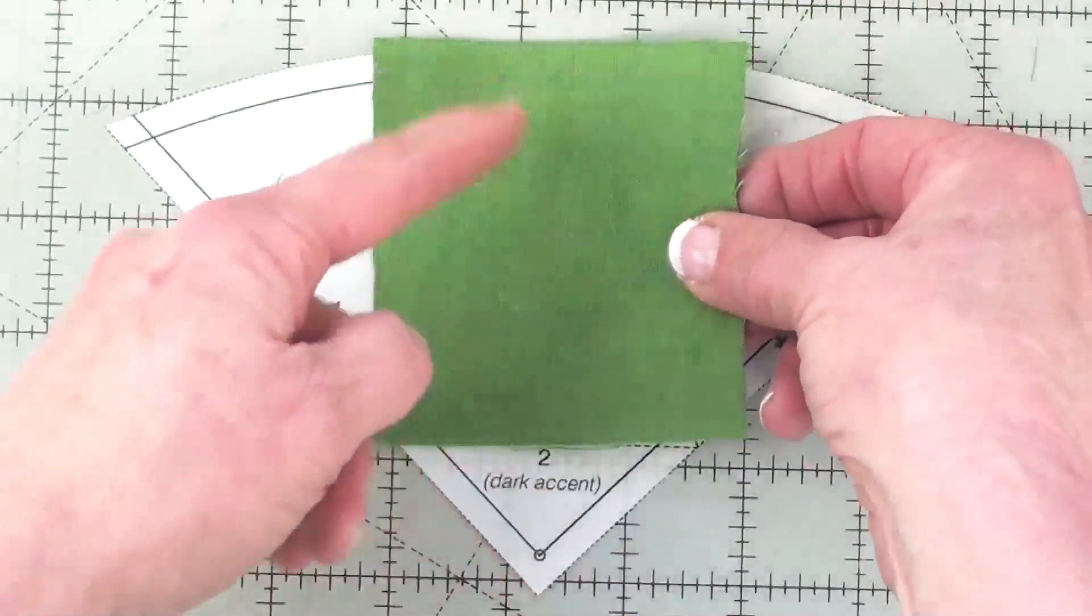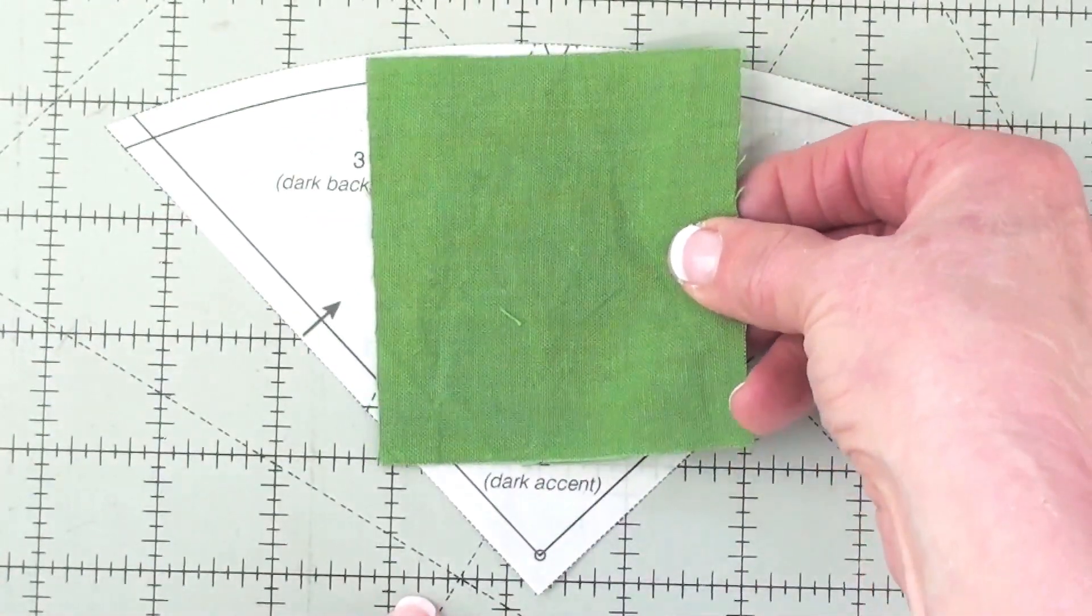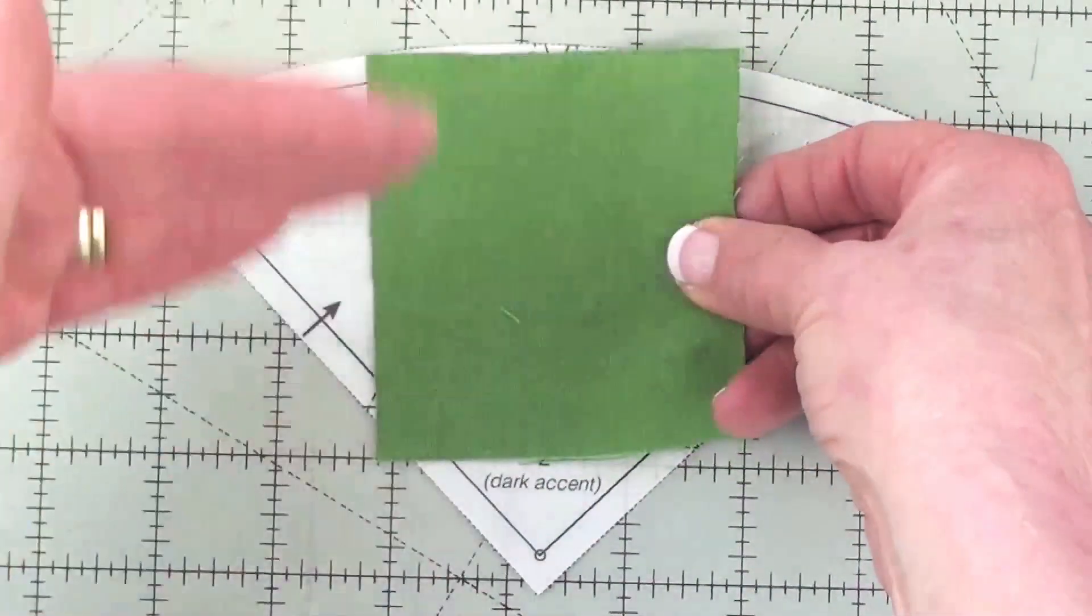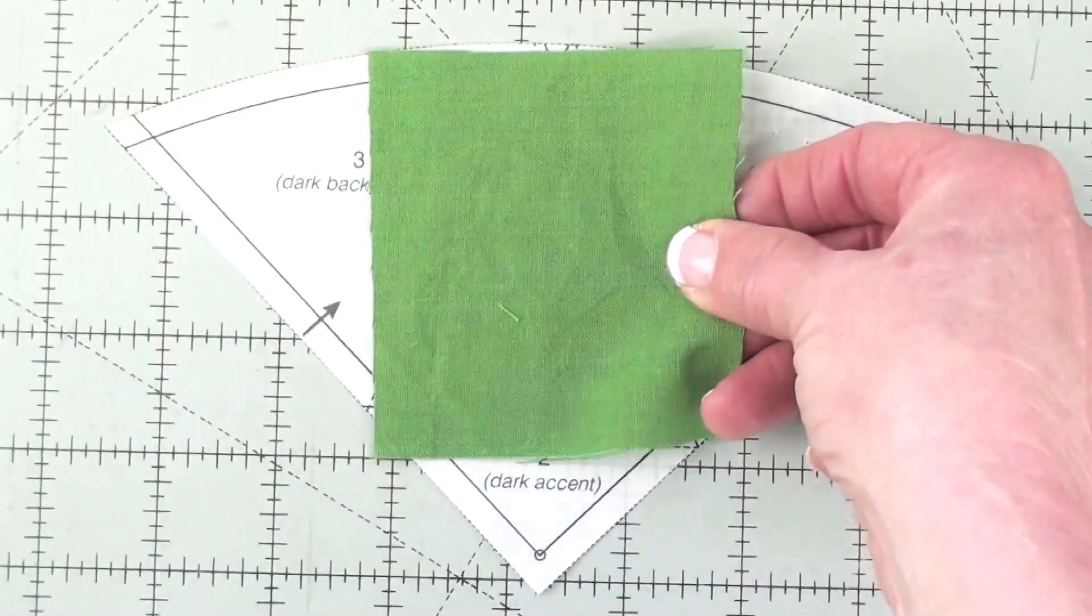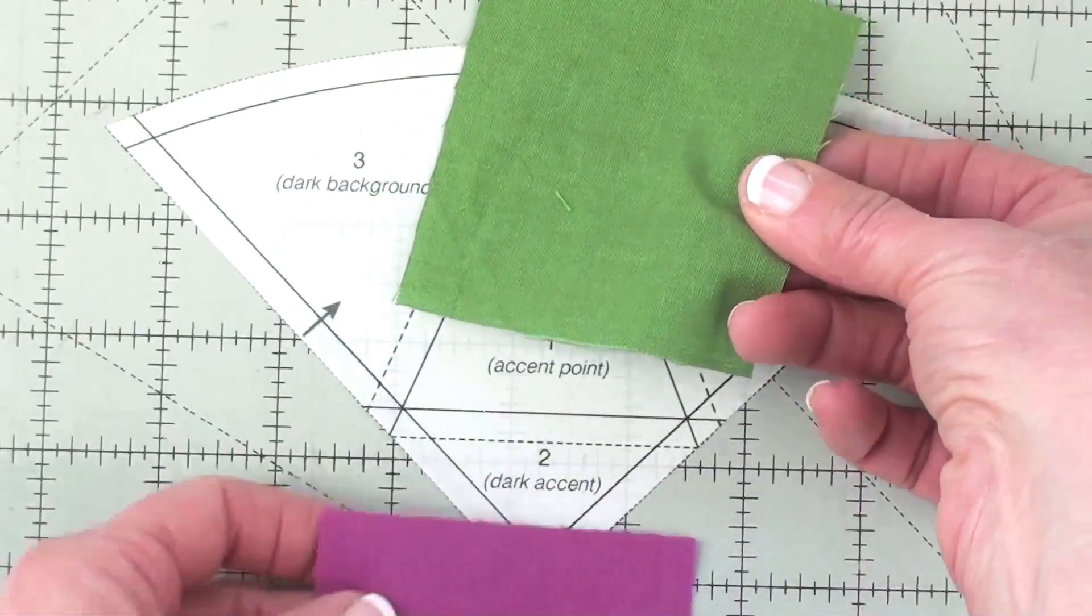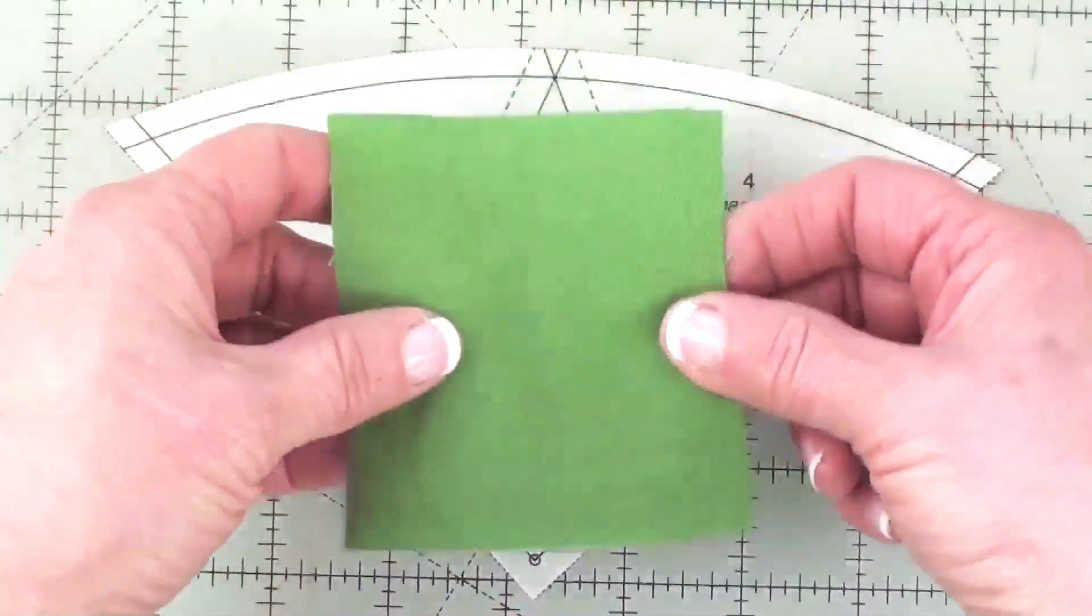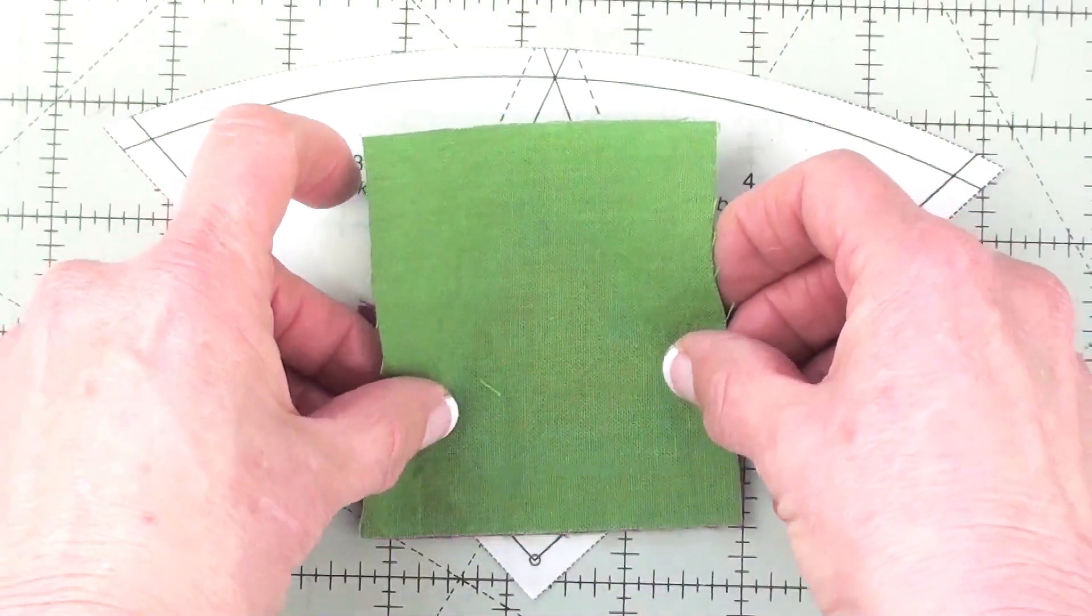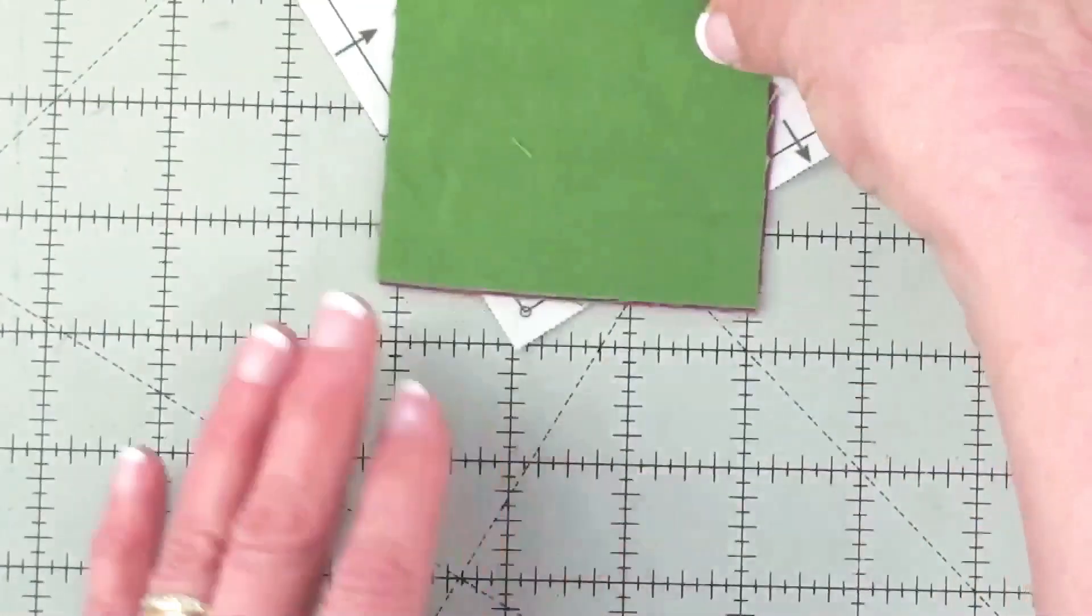I know that this number one fabric is going to be oriented this way and I know that I want the number two piece of fabric down at the bottom and I'm going to place those right sides together with the raw edges matching down here.